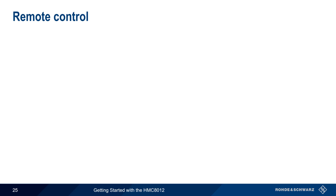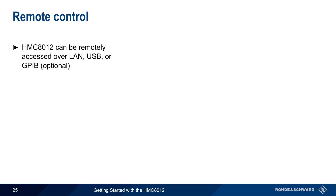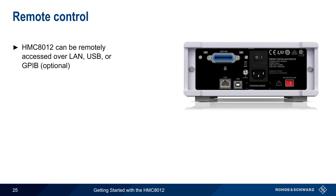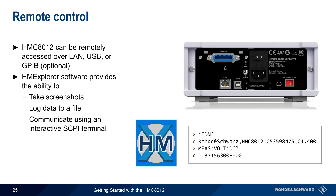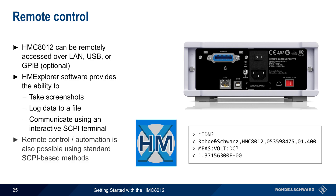Our final topic is remote control. The HMC 8012 can be remotely controlled over LAN, USB, or an optional GPIB interface, all of which are located on the rear panel of the instrument. The easiest way to interface with the HMC is using the free HME Explorer software package, which provides a graphical user interface for common tasks such as taking screenshots, logging data to a file, and communicating with or controlling the instrument via an interactive SCPI terminal. The HMC also supports remote control and automation using standard SCPI-based methods; please see the programming guide for more detailed information.